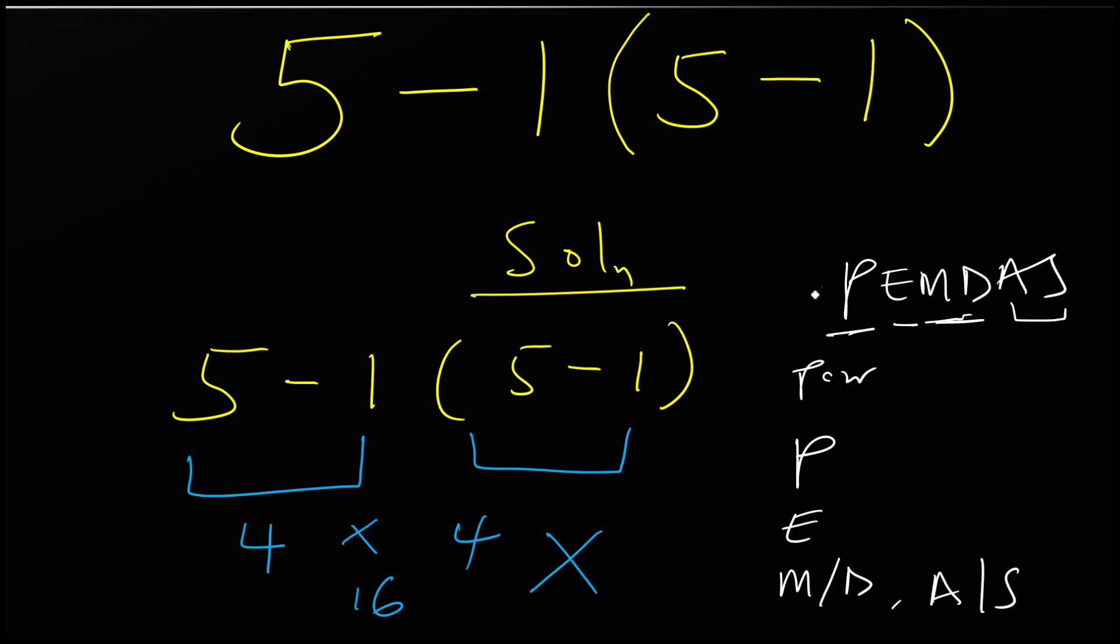Do we find any parenthesis? Yes, there's a parenthesis, so we have to do it first. From there we can see that 5 - 1 is 4.